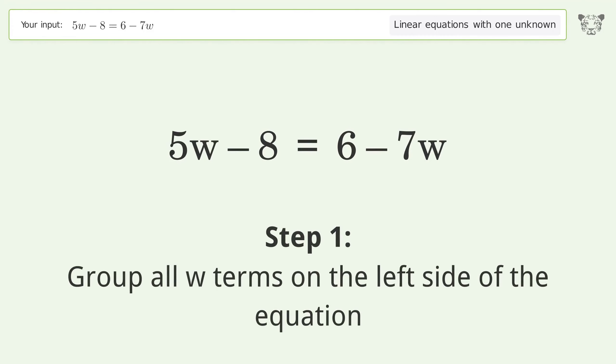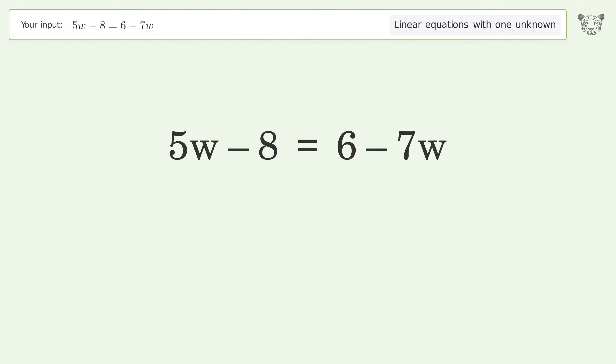Group all w terms on the left side of the equation. Add 7w to both sides. Group like terms. Simplify the arithmetic.